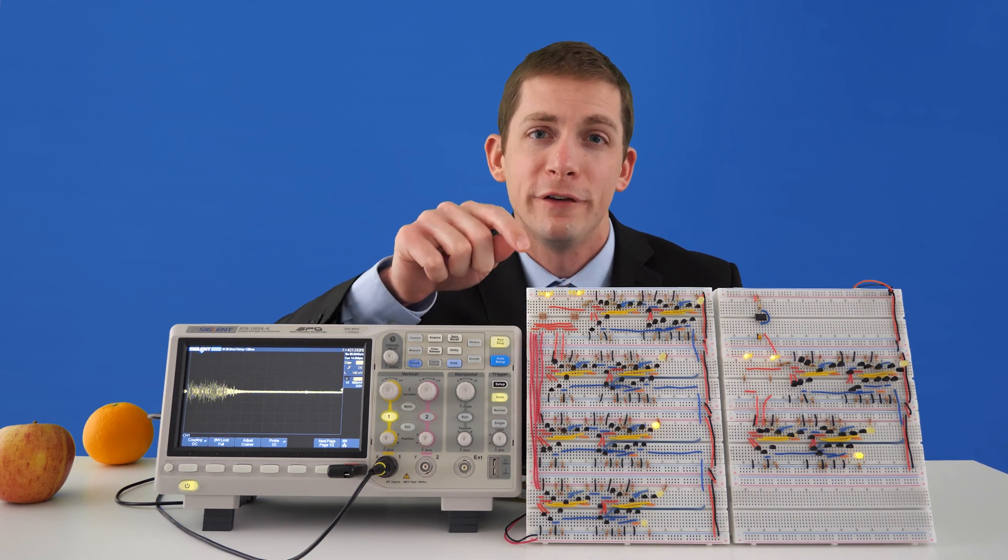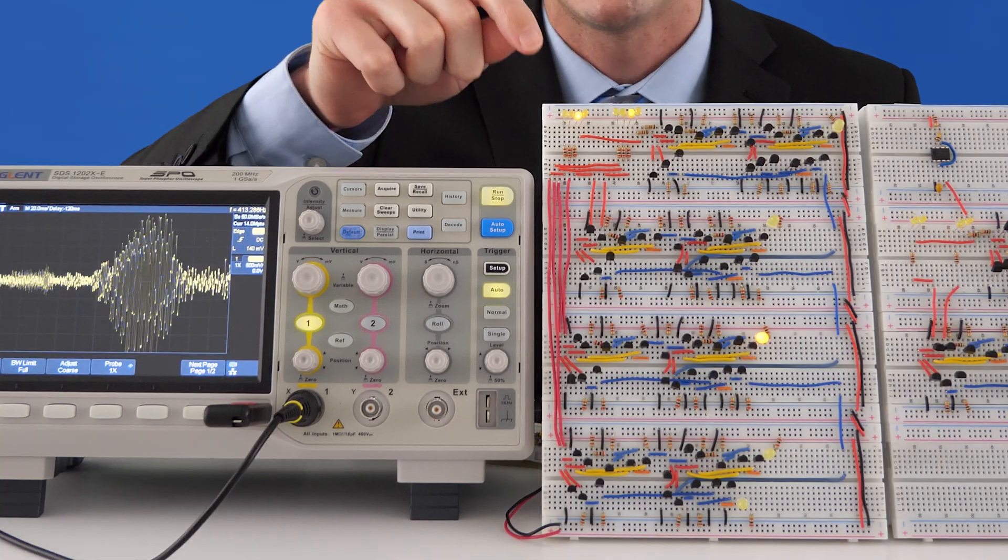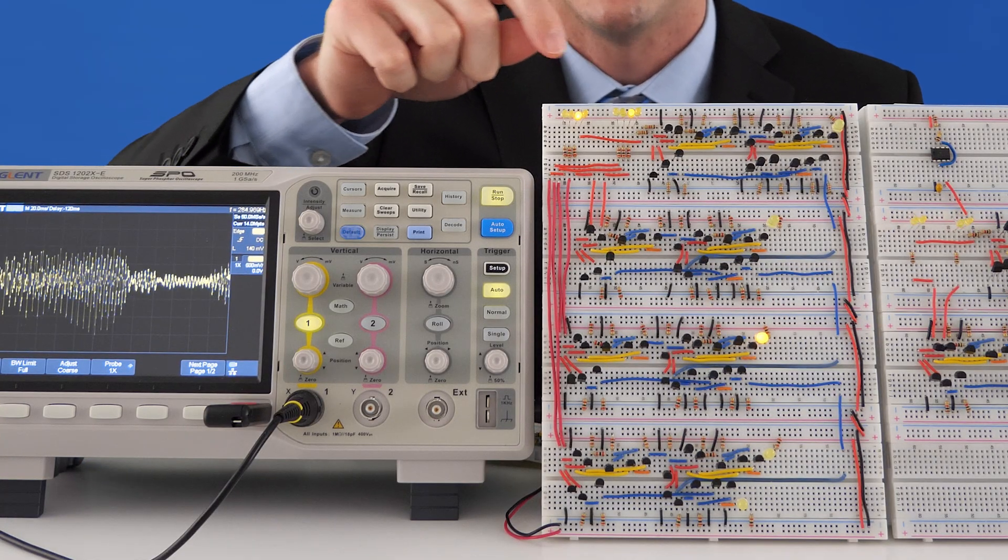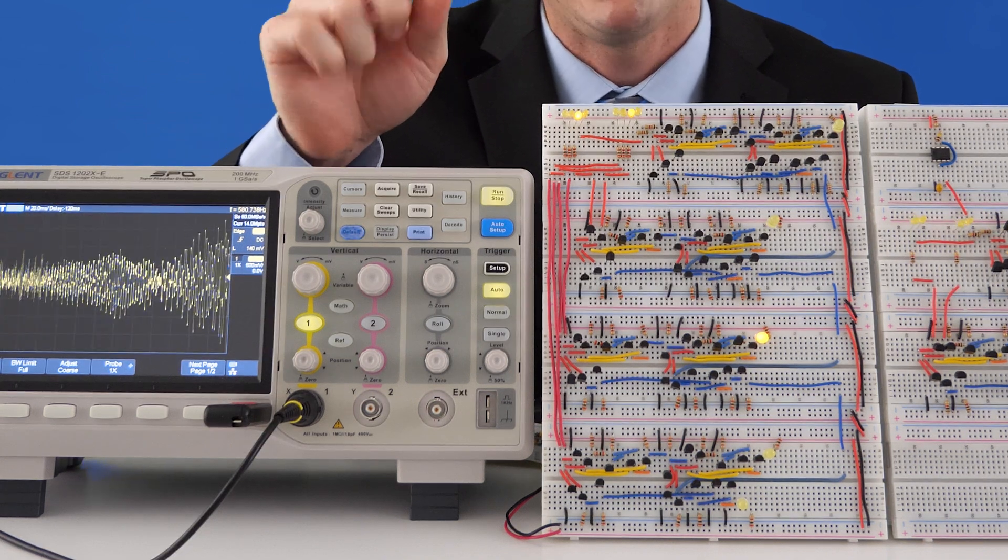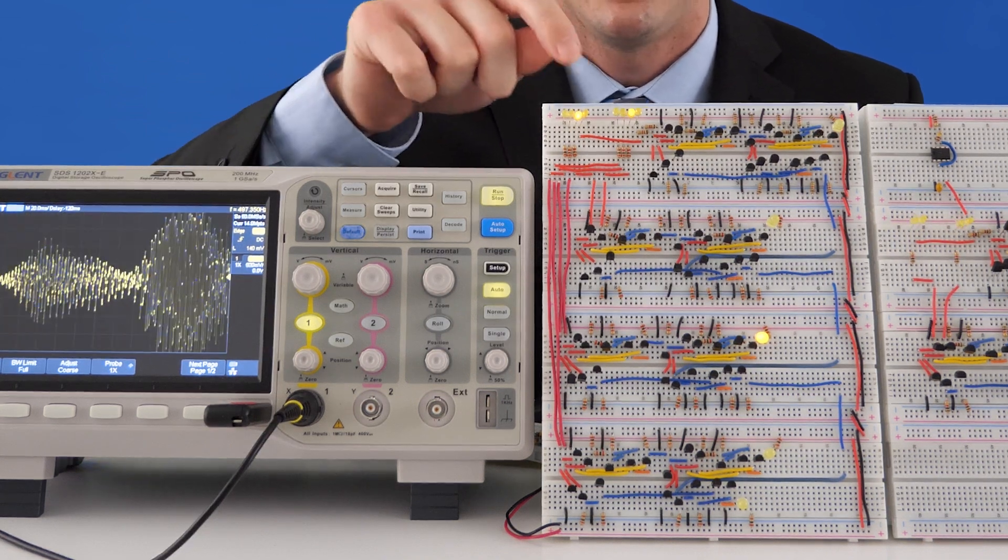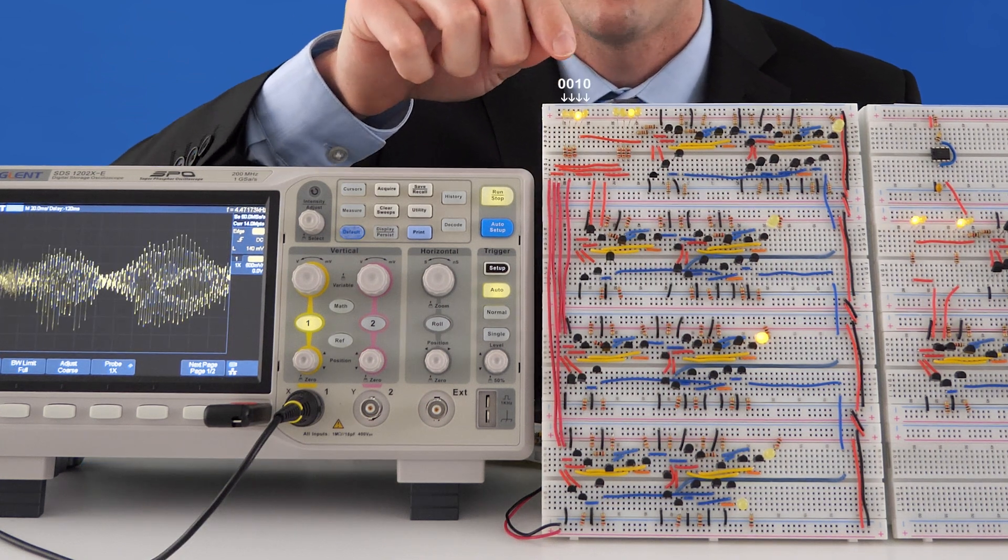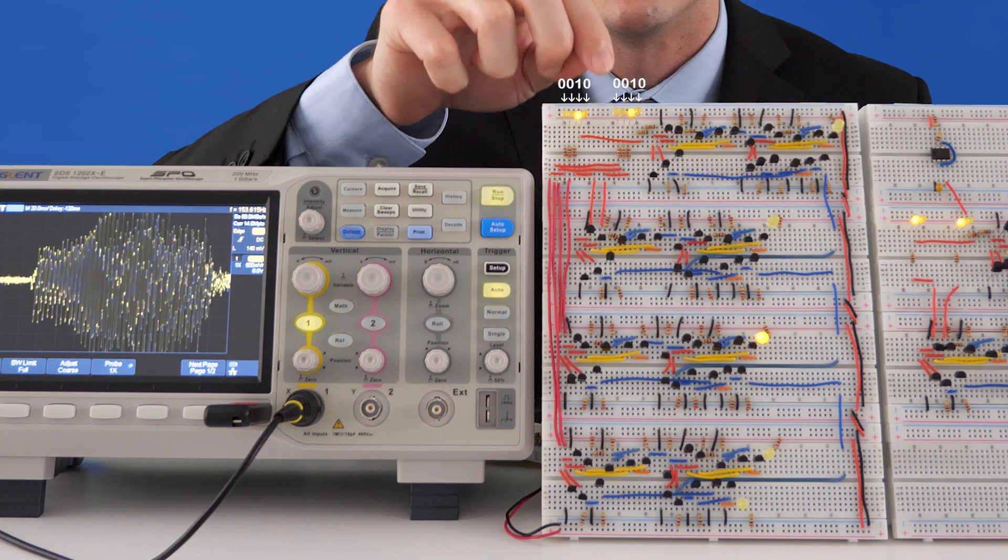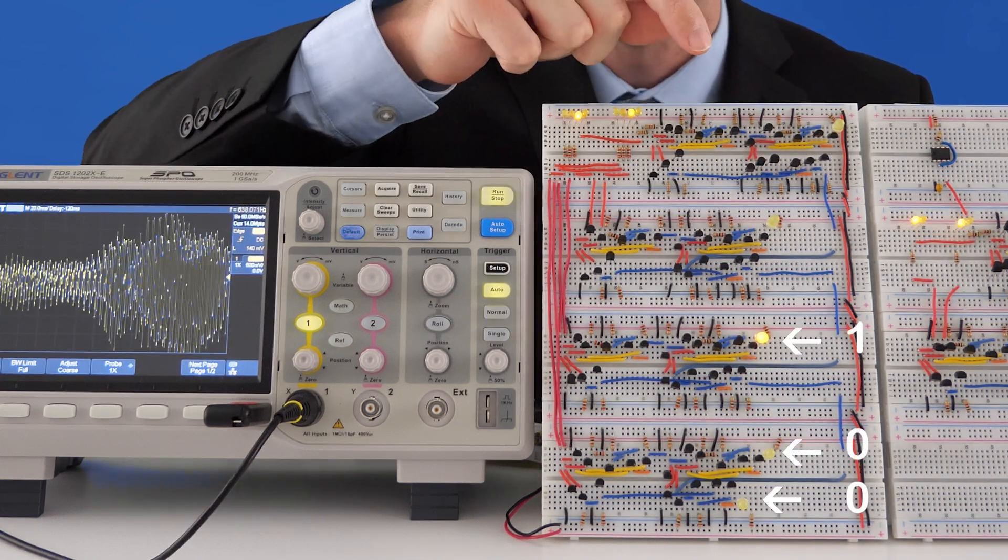For the inputs, we have four bits and four bits. The inputs are represented by these LED lights. If the LED light is off, that is a zero in binary. If the LED light is on, that is a one in binary. So you can see here we have 0010 plus 0010 equals 00100.